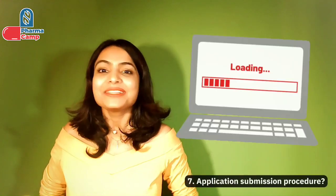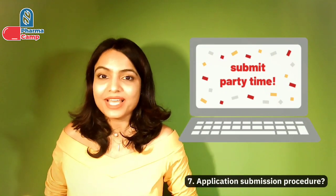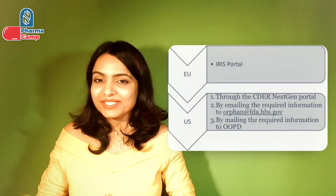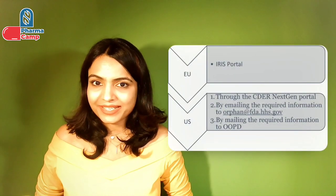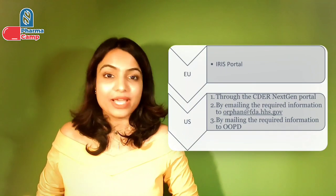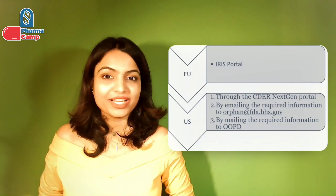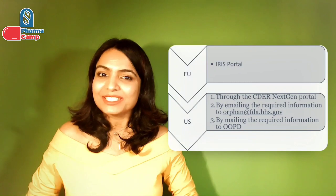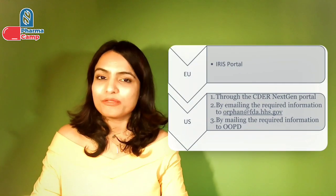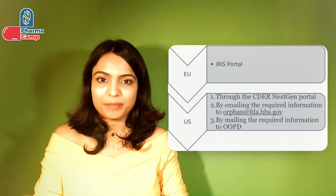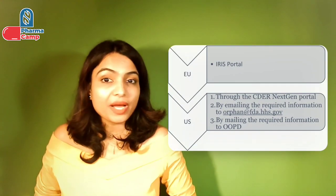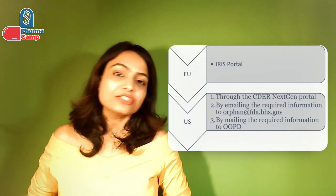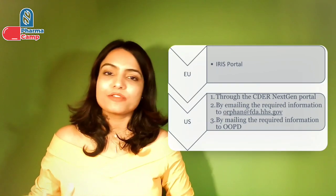The seventh comparison point is application submission. In the EU, the orphan drug designation application is submitted to EMA via the IRIS portal. In the US, the application is submitted to the Office of Orphan Product Development (OOPD) either by email or through the FDA portal.